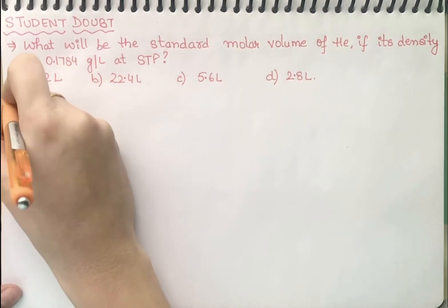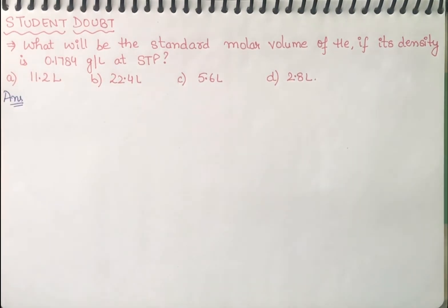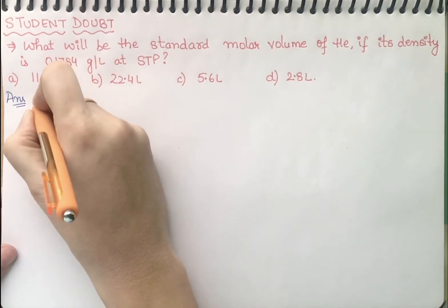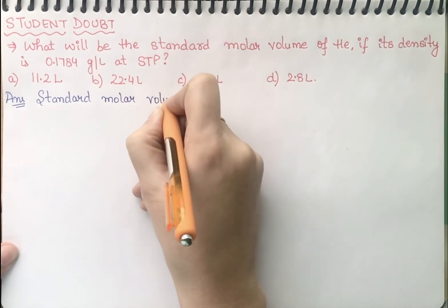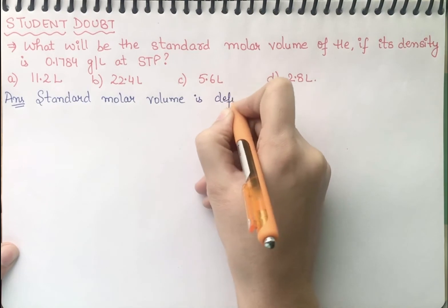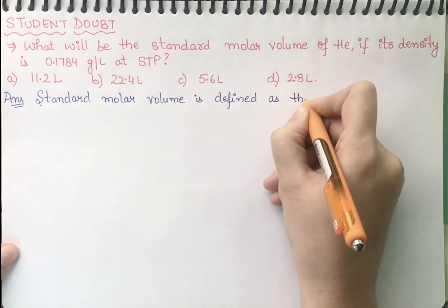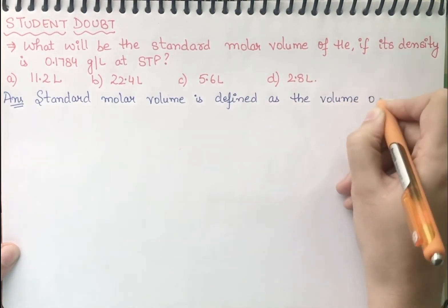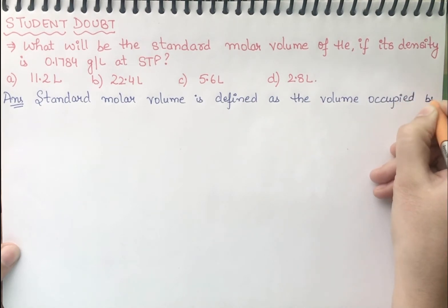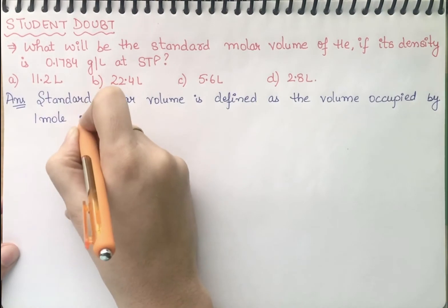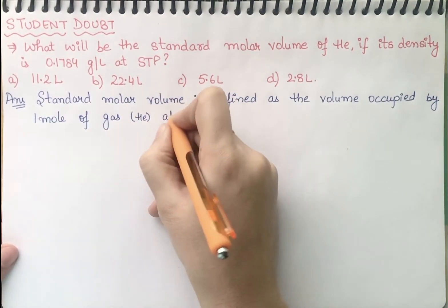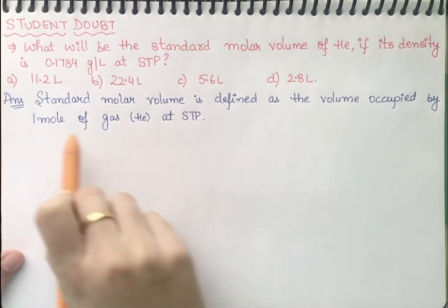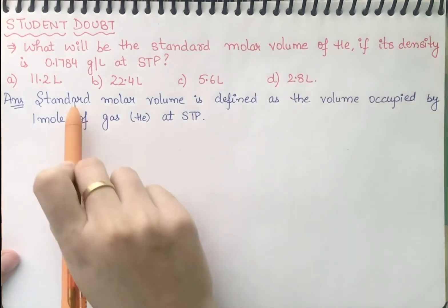First of all, we should know what is standard molar volume. According to the definition, standard molar volume is that volume which is occupied by one mole of gas at STP. So, standard molar volume is defined as the volume occupied by one mole of helium gas at STP — at standard temperature and pressure, one mole of gas occupies that volume.